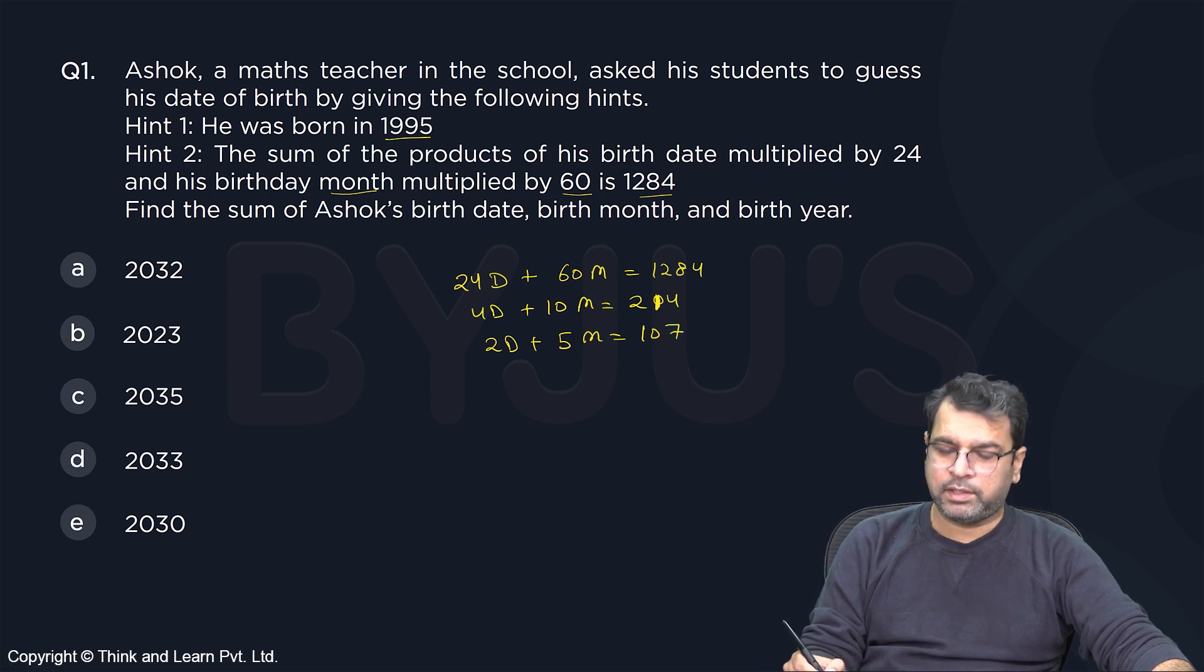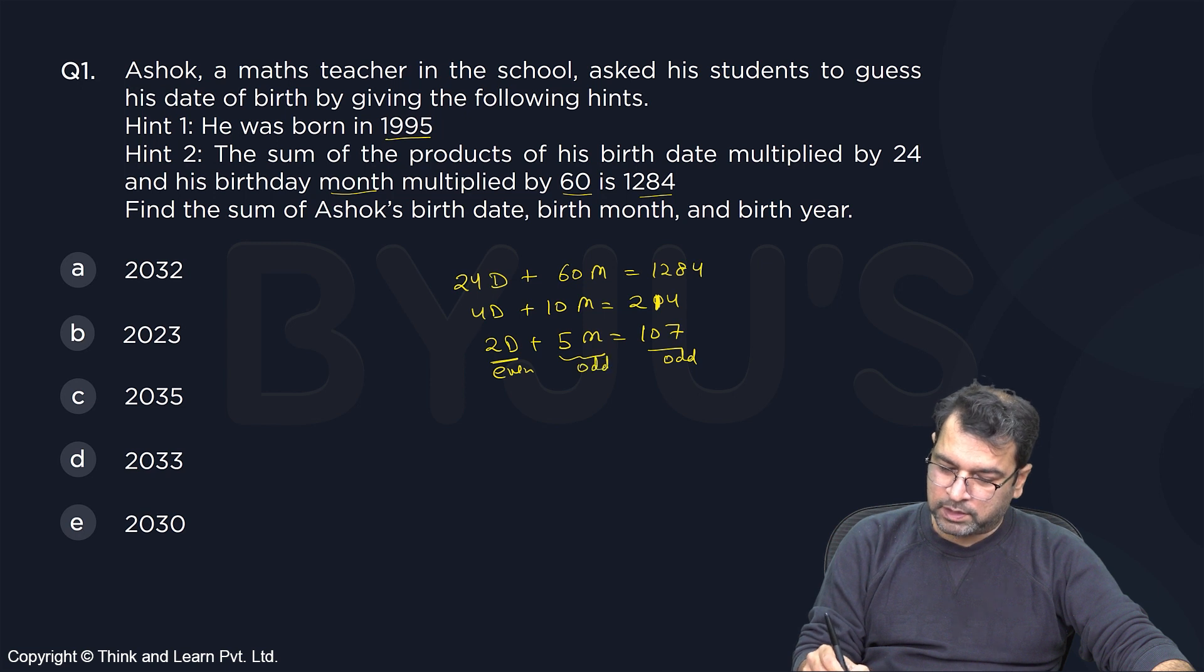I need to basically find the number of days and number of months, number of integral solutions we are talking about here. So what can we do? You can see that this number is odd. 5 times something can be odd, can be even. This is definitely even. This is even, this is odd. So this has to be odd. Even plus odd gives you odd. This is the only possibility.